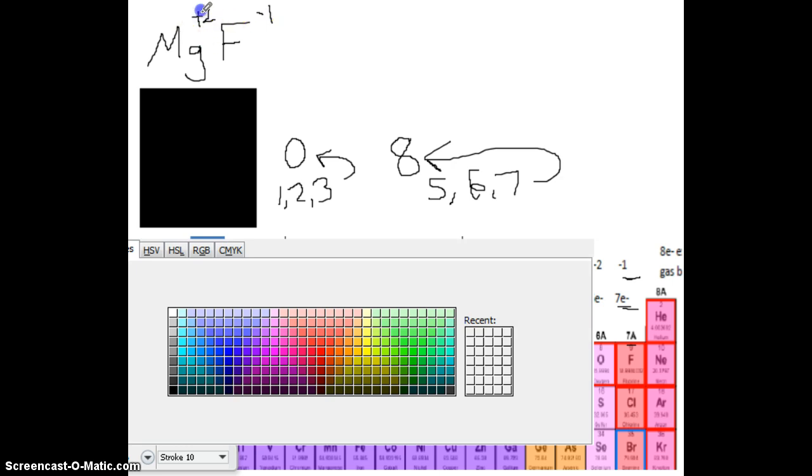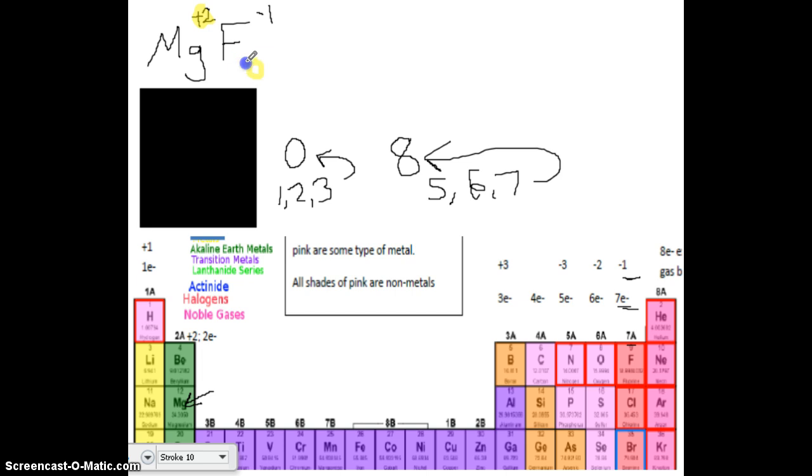Now it's going to look like they're going to switch places. This 2 is going to end up going down here, and this 1 is going to end up going down here. The reason why is magnesium wants to get rid of 2 electrons, whereas fluorine only wants to gain 1. So how many fluorine atoms is it going to take to make that 1 magnesium happy? It's going to take a total of 2. We have MgF2.